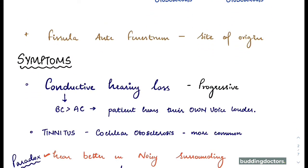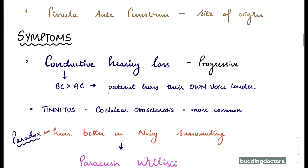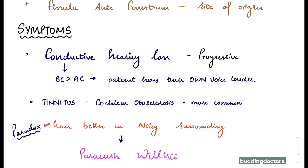Moving on to the symptoms: the first symptom is conductive hearing loss, meaning bone conduction is better than air conduction. The patient hears their own voice louder because when speaking, bone and jaw movements are transmitted to the inner ear — air conduction is affected and bone conduction is relatively better. There can also be tinnitus if the cochlea is involved, which is more common in cochlear otosclerosis.